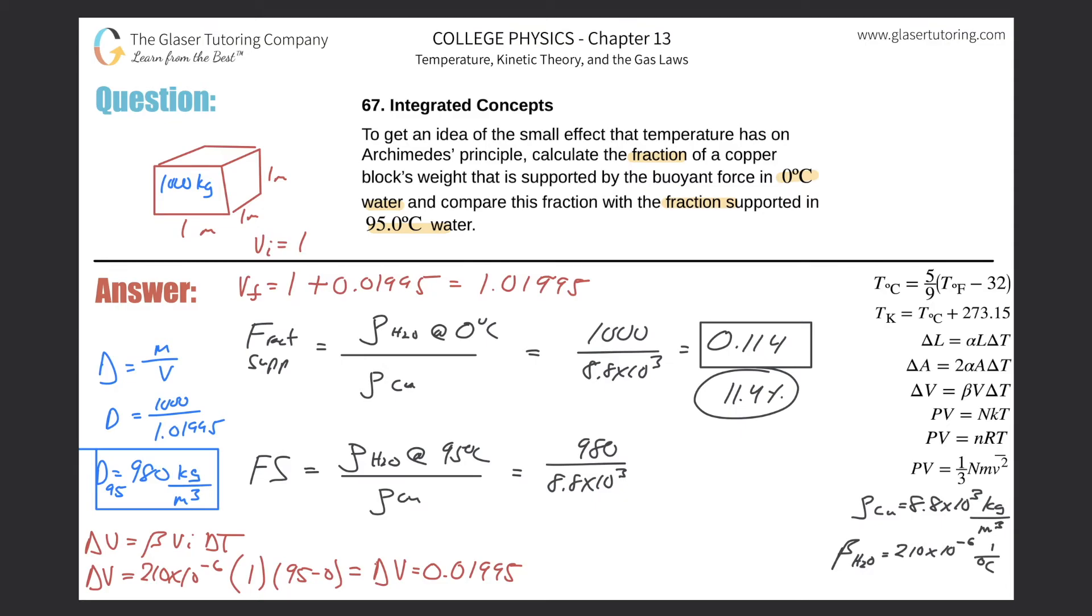You might say, well, has that volume changed at all for copper? I think they're talking about that the copper will be the same temperature in both cases. Do I know that for certain? No, I'm assuming that. So this is going to be divided by 8.8 times 10 to the third, and we get a value of 0.111. In other words, it's going to be about 11.1%.